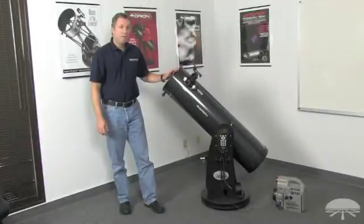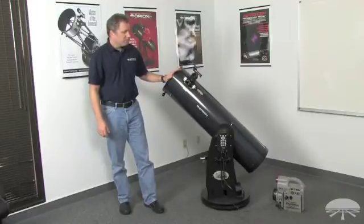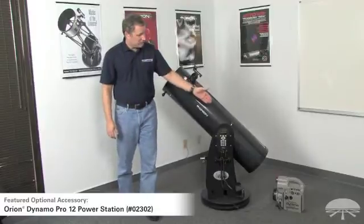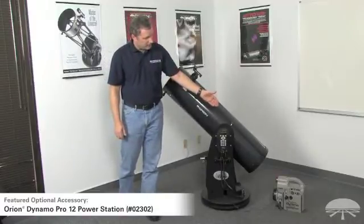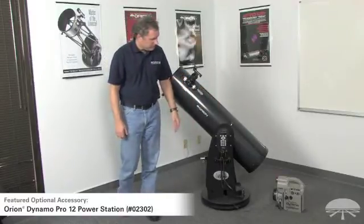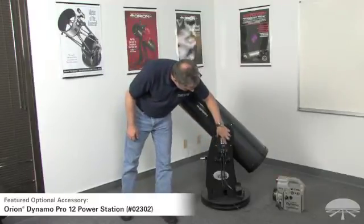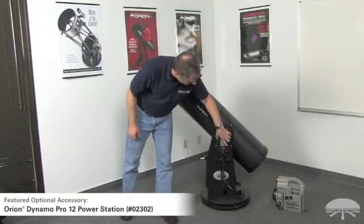To operate the XTG, you need one additional item that's not included with the telescope. And that is a power source, a 12 volt DC power source, such as I have here. This is the Orion Dynamo Pro 12 power source, and it plugs right into a jack on the altitude motor housing.